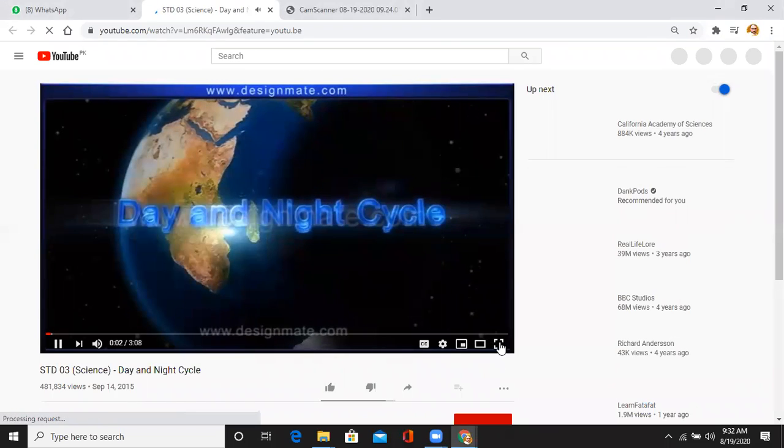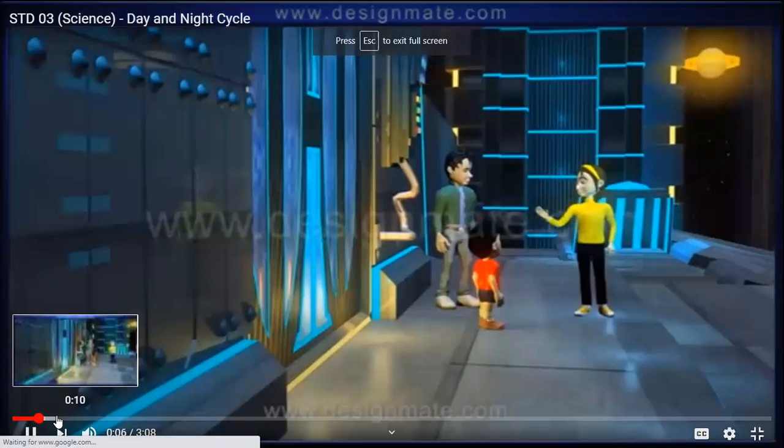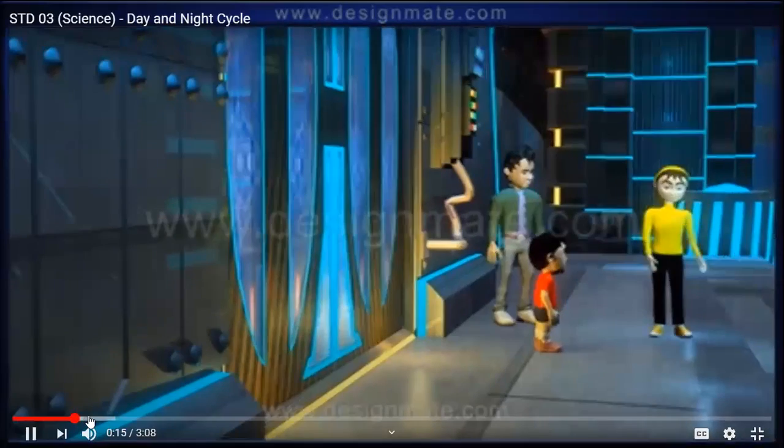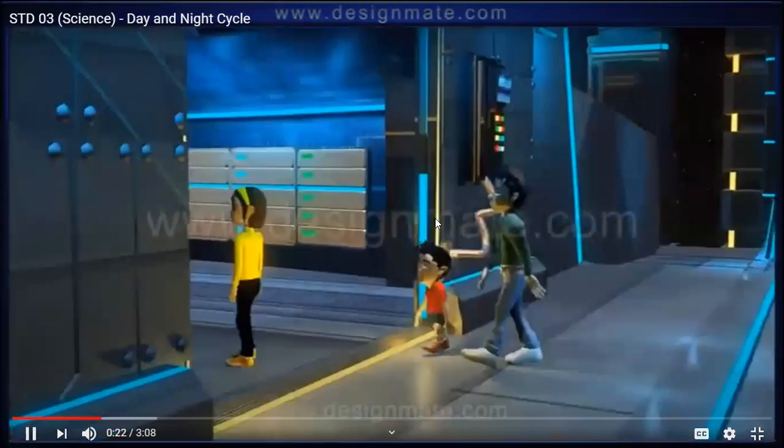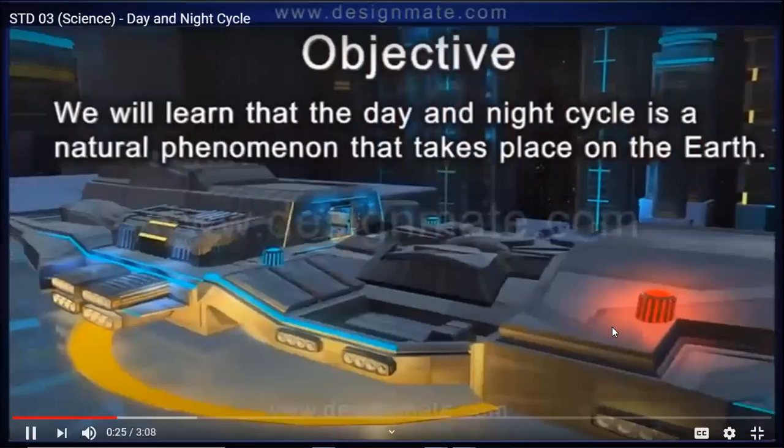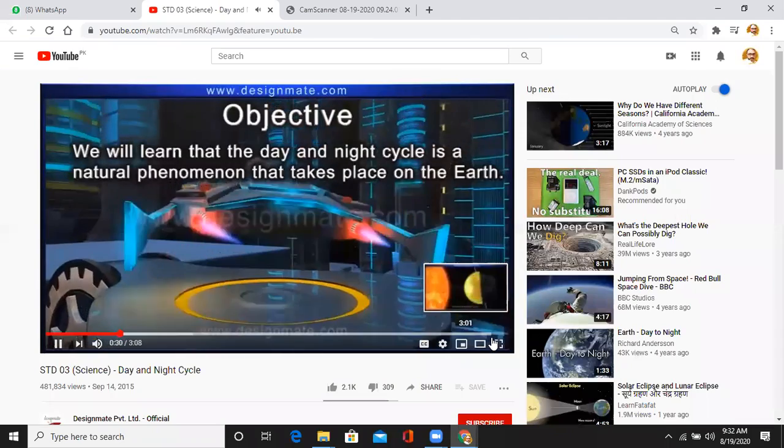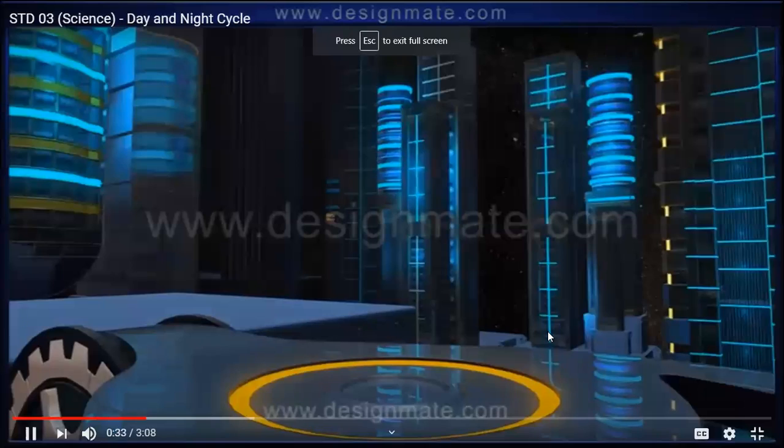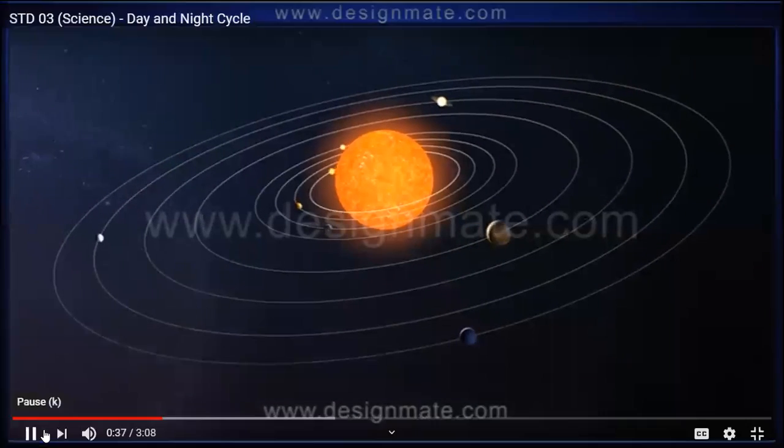Day and night cycle. Hi, my friends, don't you want to know and explore this wonder of the universe? We will learn that day and night cycle is a natural phenomenon that takes place on the Earth. Planets in the solar system are in constant motion.